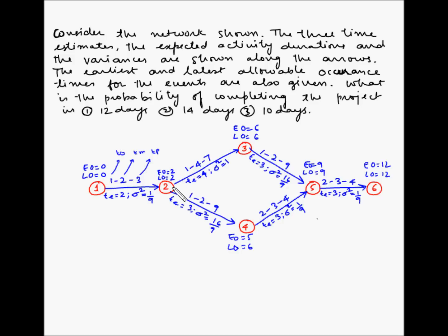For the activity between 2 and 3, 1 is the optimistic time, 4 is the most likely time, and 7 is the pessimistic time.